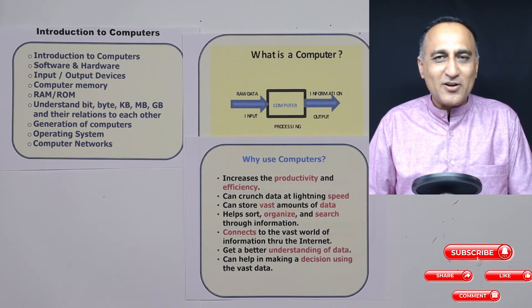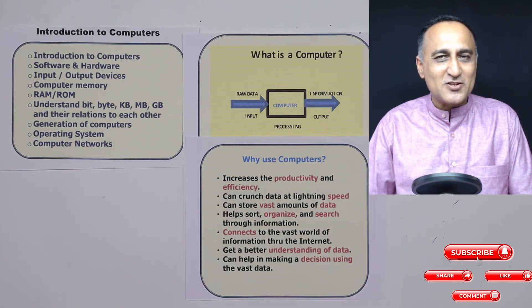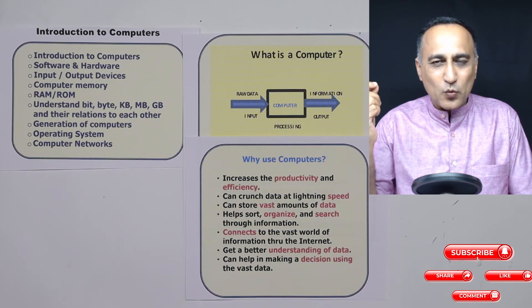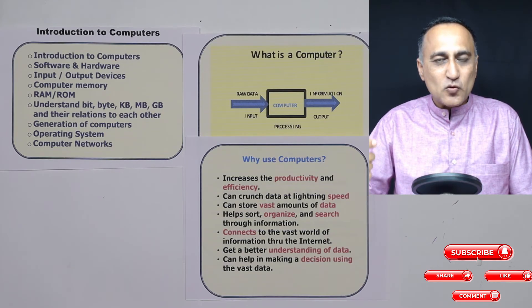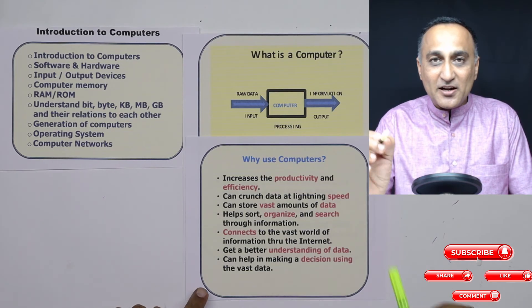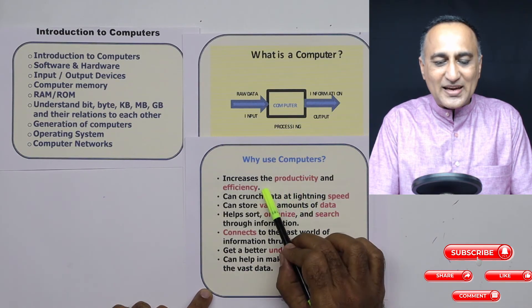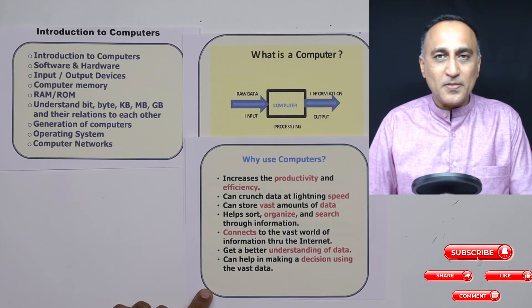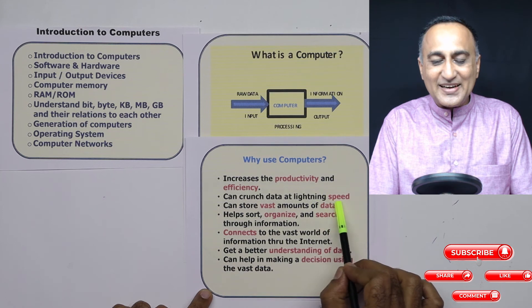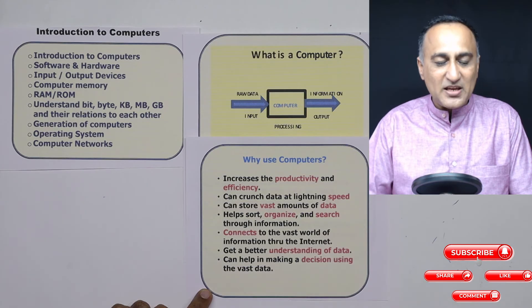With computers coming, everybody is given an ID identification and using that identification, information is stored in the computer. Whether I have paid the bill or not is a work of milli and microseconds. So what would take hundreds of thousands of people, hundreds of thousands of hours can be done now very fast. That's why computers increase the productivity and efficiency of whatever we are trying to do. Why is that possible? Because it's able to process data at a very high speed - it's an electronic machine which can process data at a very high speed.